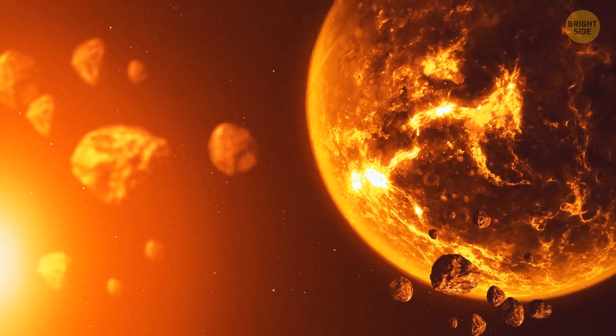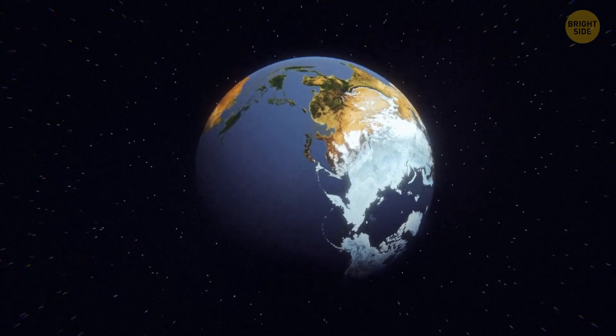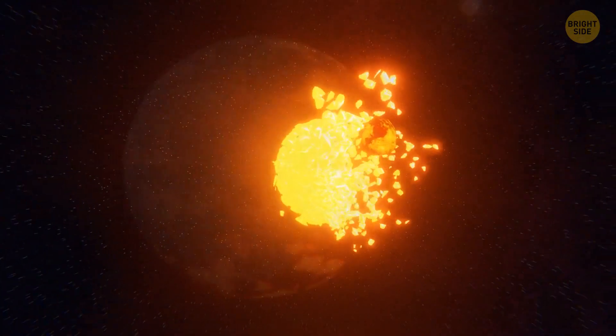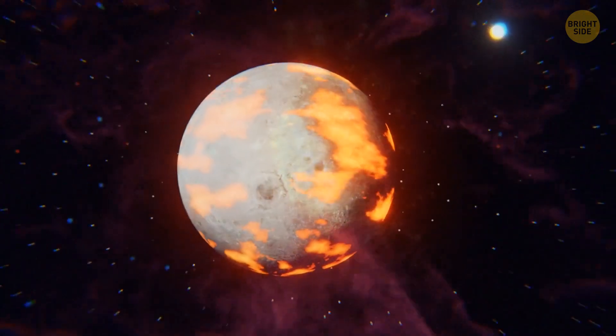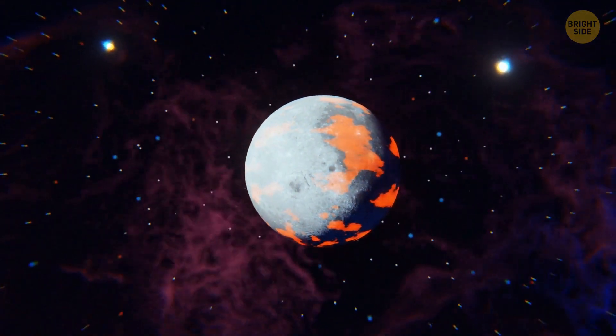Some experts believe Earth used to have a ring system a long time ago. A Mars-sized object might have collided with our home planet, which probably created a dense ring of debris around it. Some scientists think that this debris formed not a ring, but what we know today as the Moon.